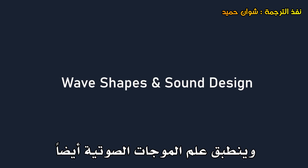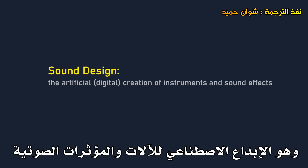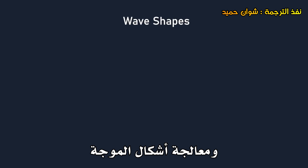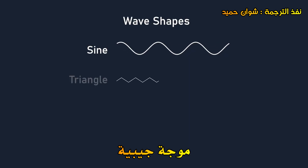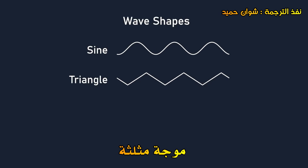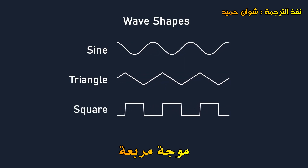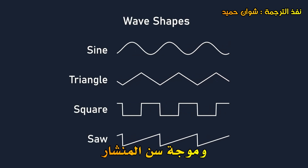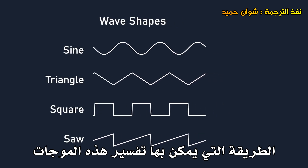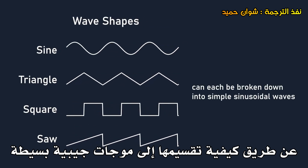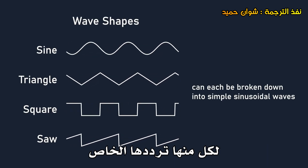The science of sound waves also applies to the world of sound design, which is the artificial creation of instruments and sound effects, such as in electronic music. Sound design is all about the combination and manipulation of wave shapes, which come in four basic forms: the sine wave, triangle wave, square wave, and saw wave. The way that these waves each sound can be explained by how they can be broken down into simpler sinusoidal waves, each with their own frequency.